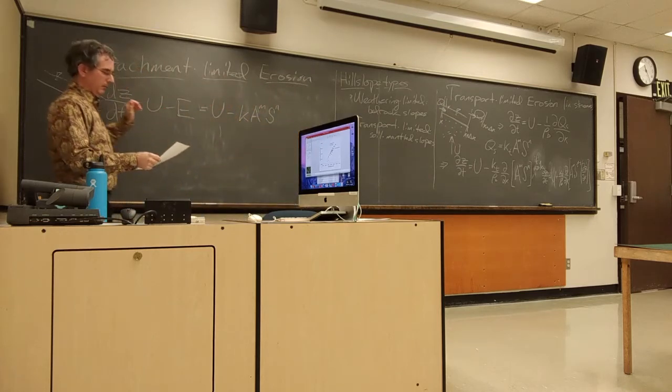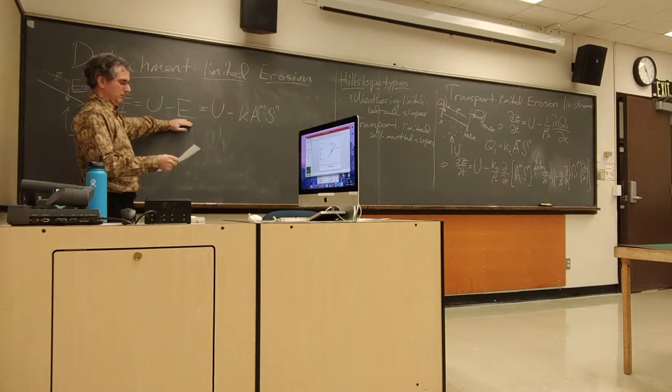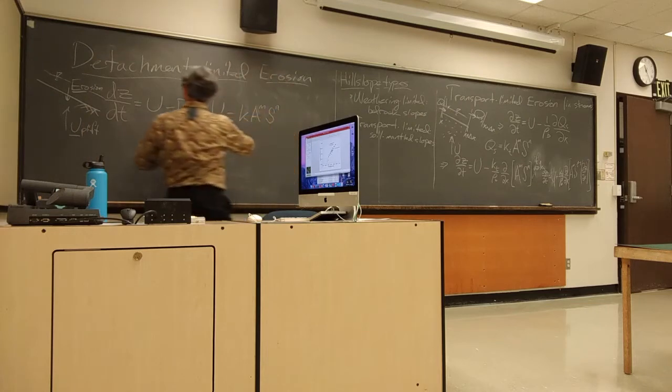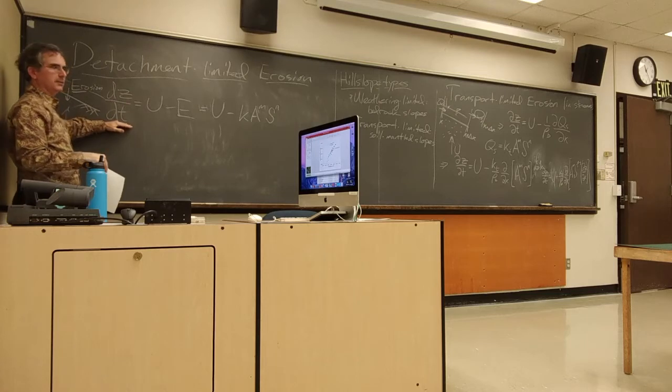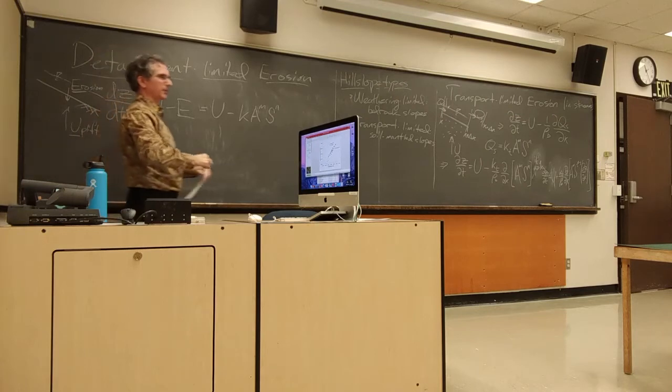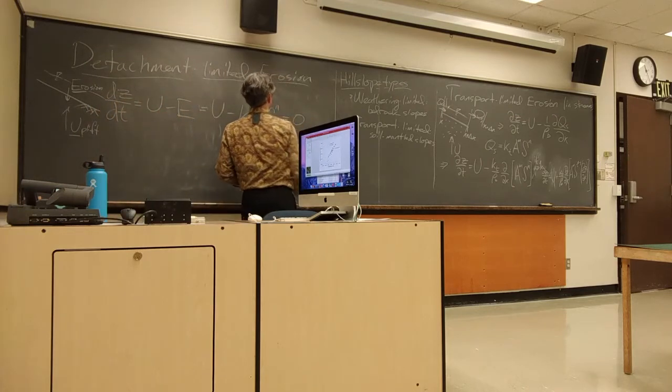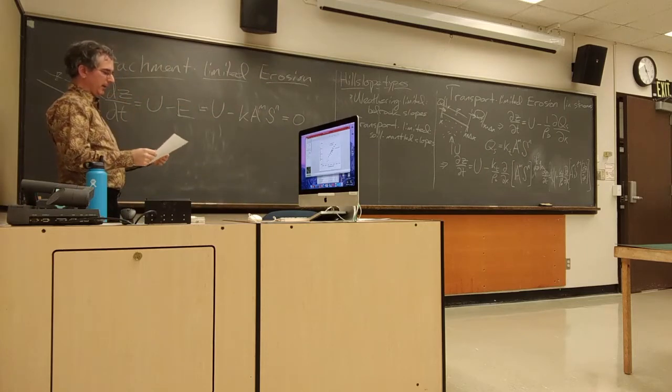So, if uplift balances erosion, then over here, we'll start with over here. I can write, well, if uplift balances erosion, what's dz dt equal to? Zero. Yeah. I mean, I'm essentially saying, I'm defining the case where this totals to zero.